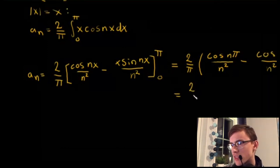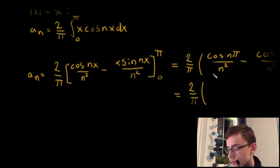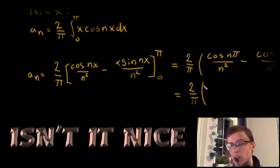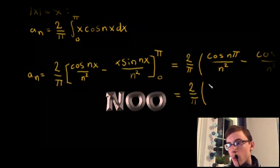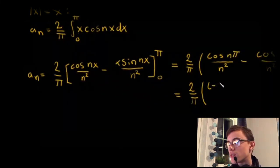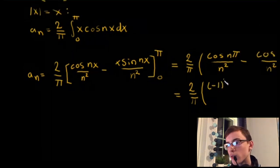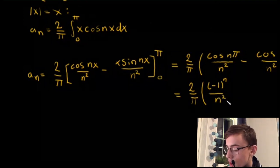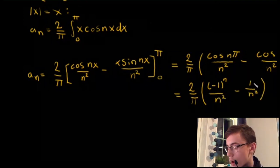This simplifies to 2/π times [(-1)ⁿ/n² minus 1/n²], because cos(nπ) equals (-1)ⁿ. If n is even we get cos(2π), cos(4π), etc., which is just 1. If n is odd, like π or 3π, it becomes negative 1. And cos(0) is just 1, giving 1/n².